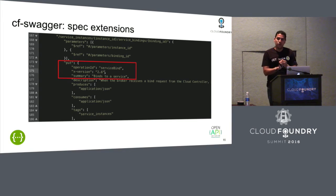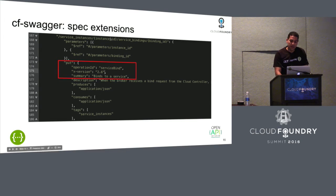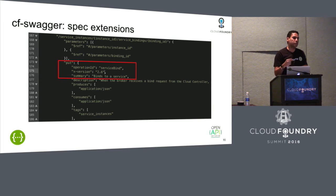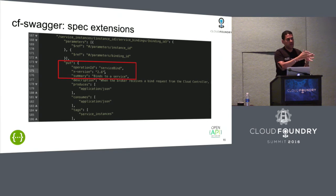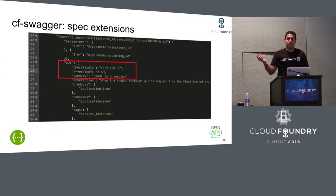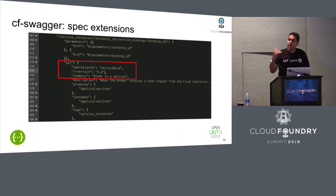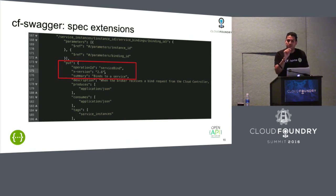What we had to do as part of our specification is add a little bit of extensions to it. For instance, we added this X-version extension to essentially specify that this particular operation in the specification got introduced at version 2.6. So you have to start at one particular version. What Tony showed you is version 2.5. And if you go to version 2.6, the new specification has these small extensions. This is all valid. As part of Tony designing the Swagger specification and now with the Open API, they looked ahead and saw that people want to add something extra to the specification.